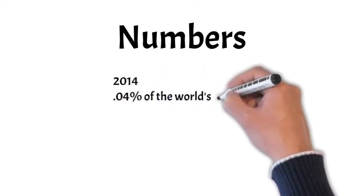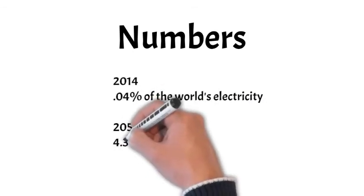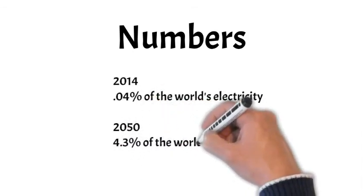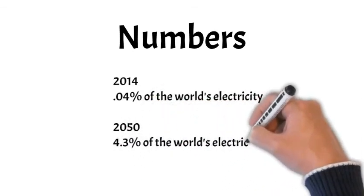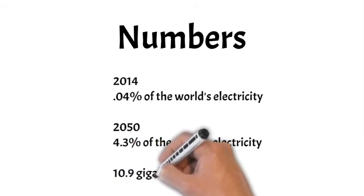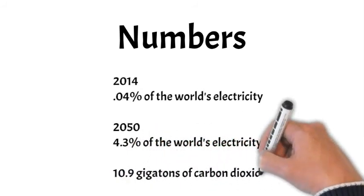CSP comprised 0.04% of the world's electricity in 2014. If that number increases to 4.3% by 2050, we could avoid 10.9 gigatons of CO2 emissions.